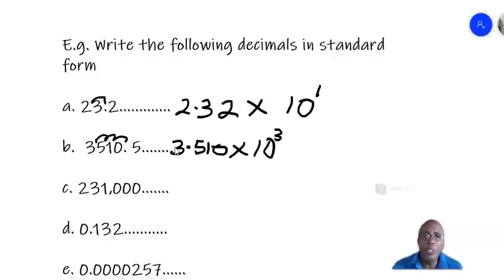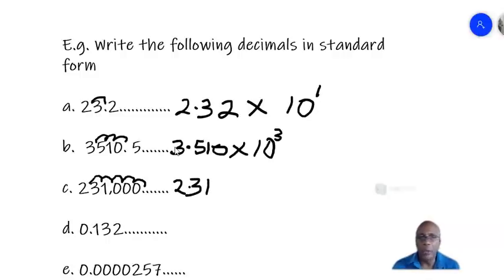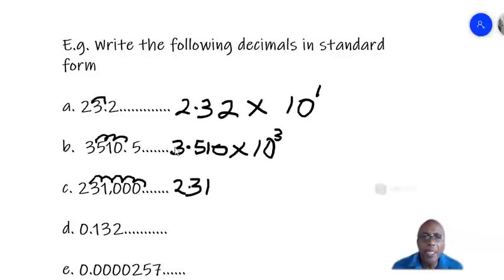For example c, 231,000 — that's a whole number, meaning the point is after the last digit. You need to move the point one, two, three, four, five places to get 2.31. You don't have to add the other zeros unless you are bringing it to a number of significant figures that would involve them. So the answer is 2.31 times 10 to the power of five.